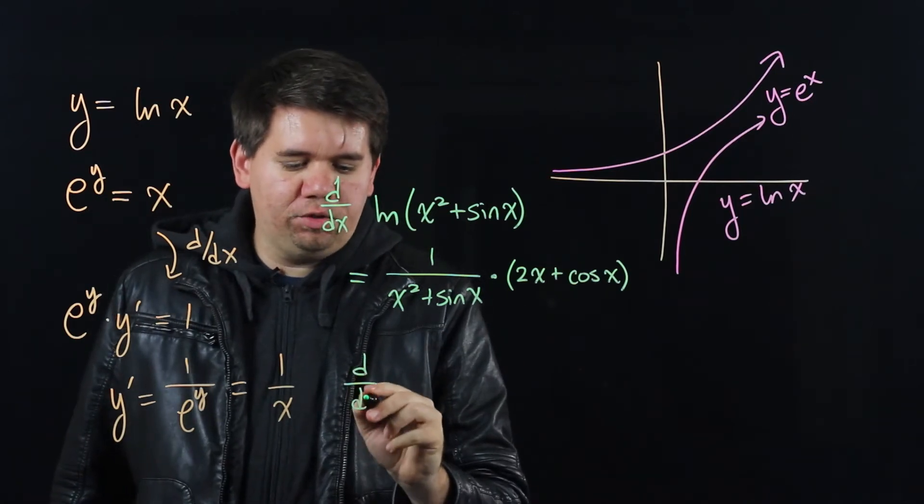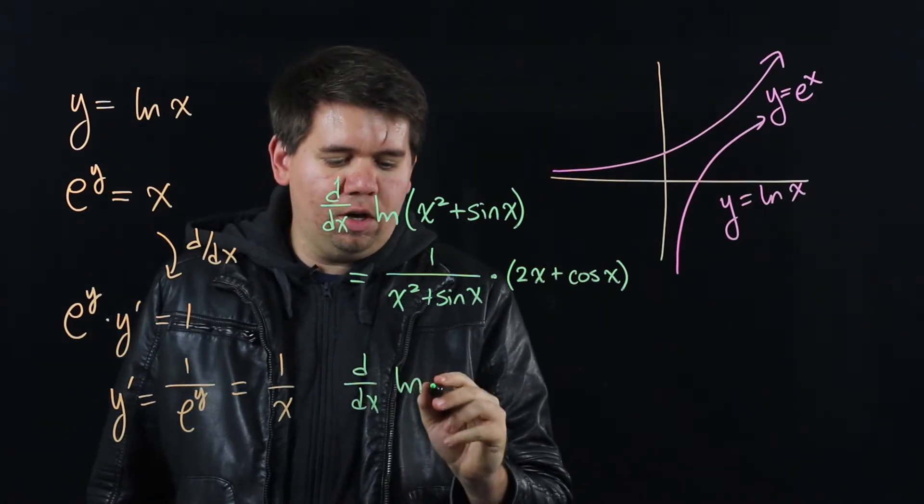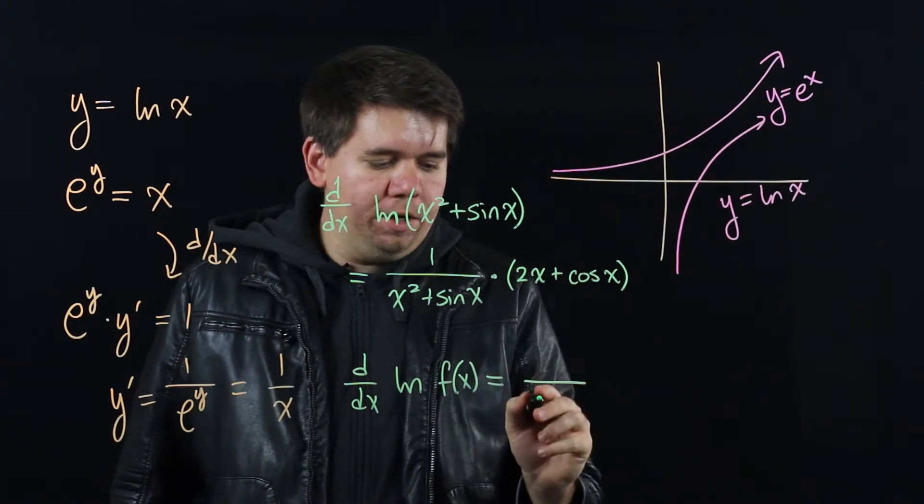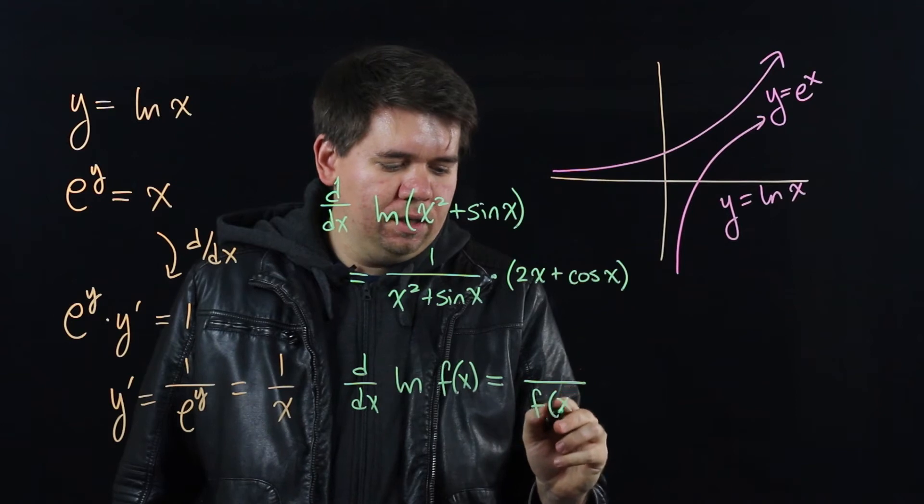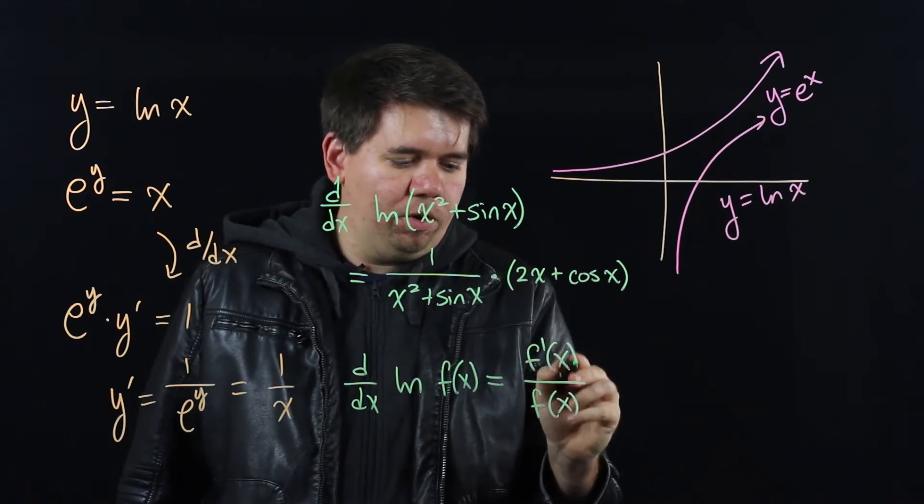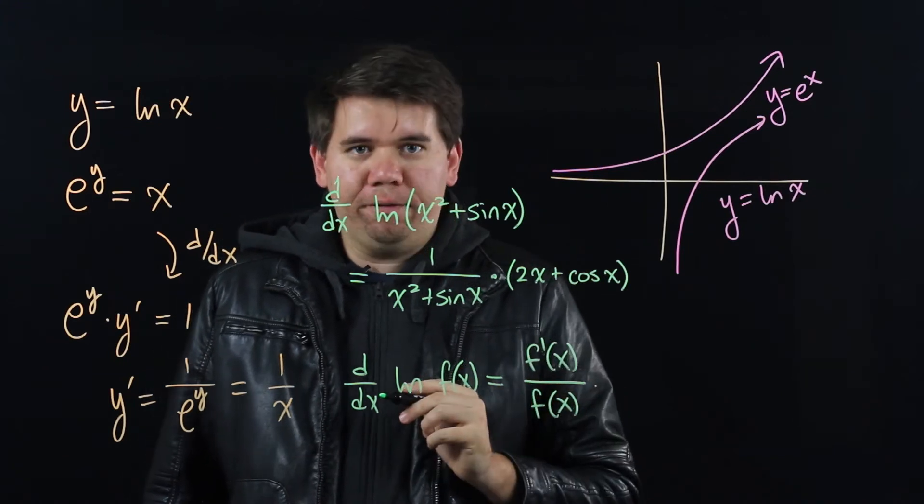In general, whenever you have the derivative of the natural log of some function f of x, it'll just be 1 over that function, then times the derivative of the function, or simply f prime over f.